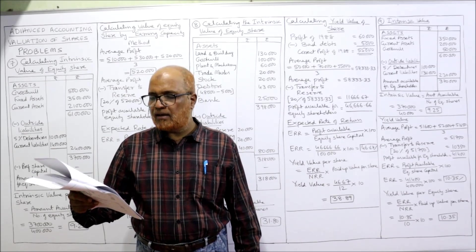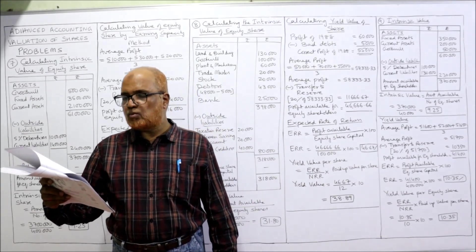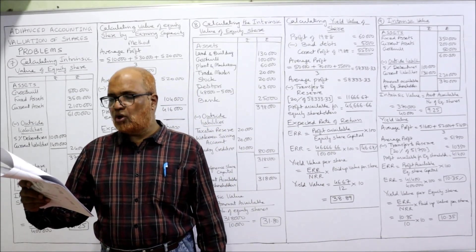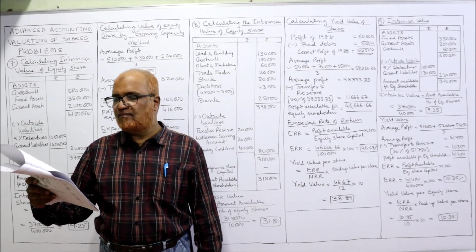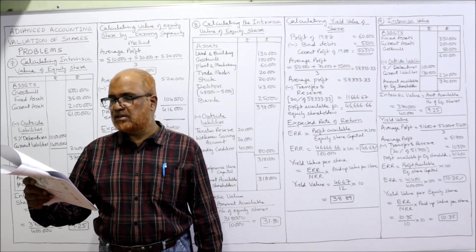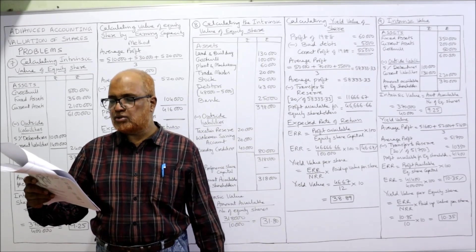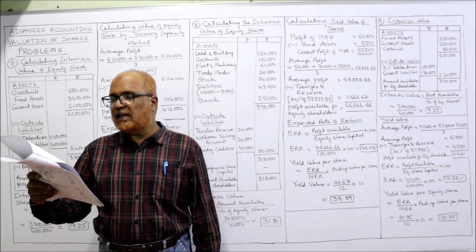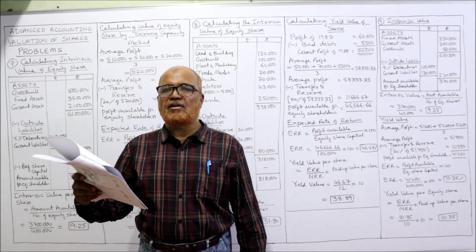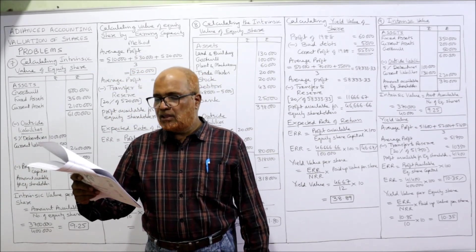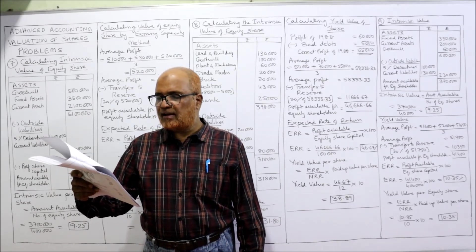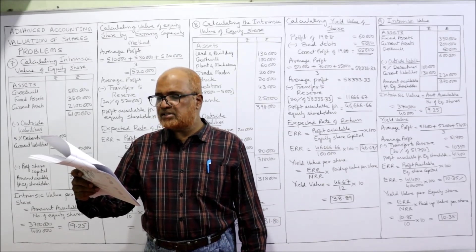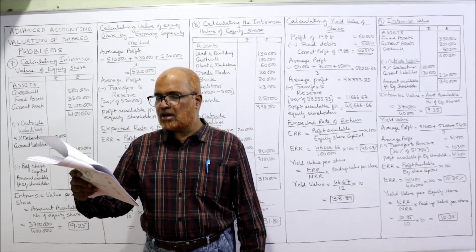Share capital: 4 lakh. Reserves and surplus: 1 lakh 10,000. Long term borrowings — 5% debentures: 1 lakh. Current liability: 1 lakh 30,000. Total of liability side: 7 lakh 40,000. Assets — tangible assets: 5 lakh; intangible assets: 40,000; current assets: 2 lakh.